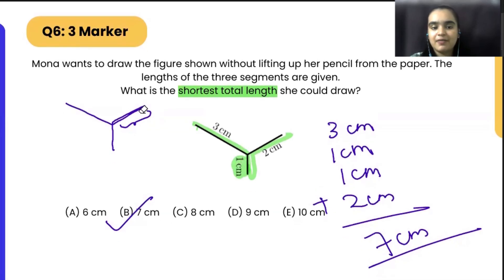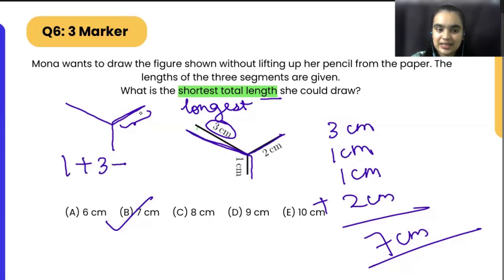Now, I am having a question for you. What is the longest total length she could draw? So for longest, what we have to do, we have to repeat number three. Correct. So we can start from one, then we will go to three, then we will overlap three, and then we will go to two. So it will be one plus three plus three plus two. That will be nine. That is the longest.